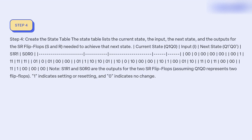Step 4: Create the state table. The state table lists the current state, the input, the next state, and the outputs for the SR flip-flop — S and R values needed to achieve the next state. Note that S and R outputs are for the two SR flip-flops, assuming the current state represents two flip-flops. A value of 1 indicates setting or resetting, and 0 indicates no change.